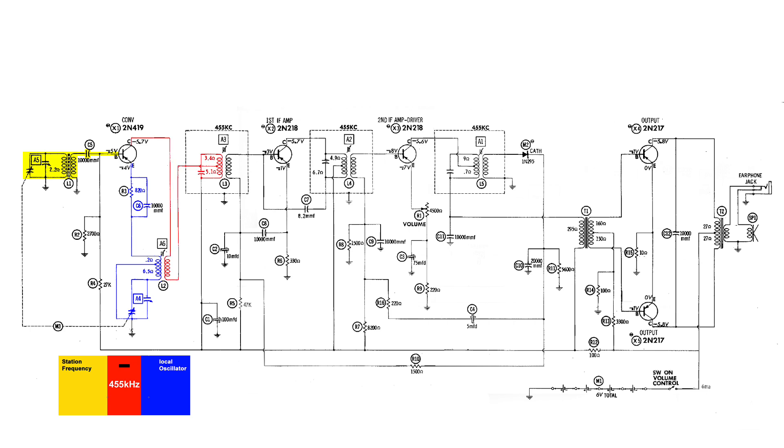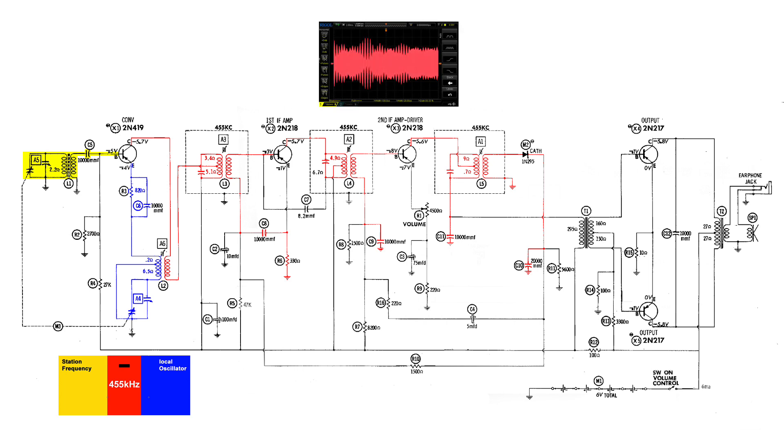All the IFs are very sharply tuned to 455 kilohertz. This signal is sent to the next transistor which amplifies it, it gets filtered again, and then again sent to the next transistor which amplifies it again and gets filtered for the last time in the third IF can.